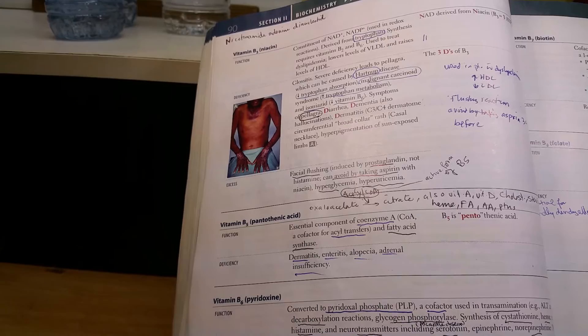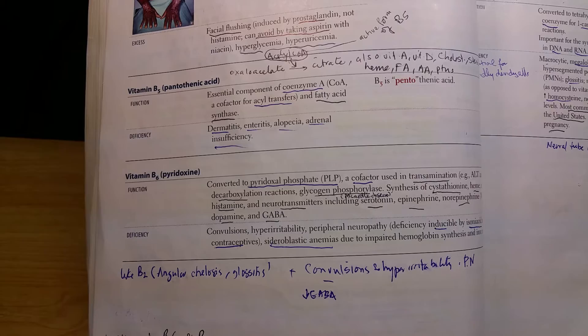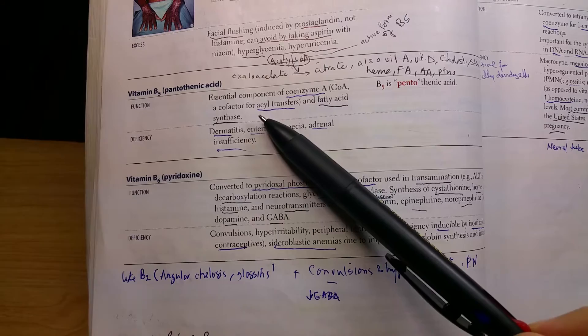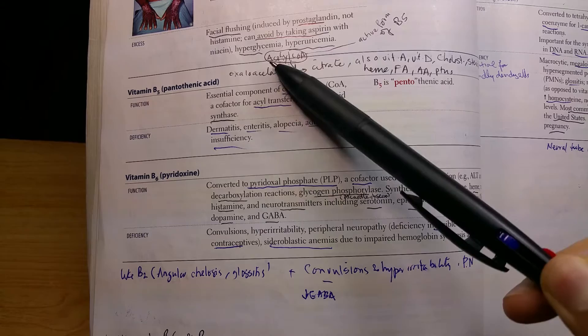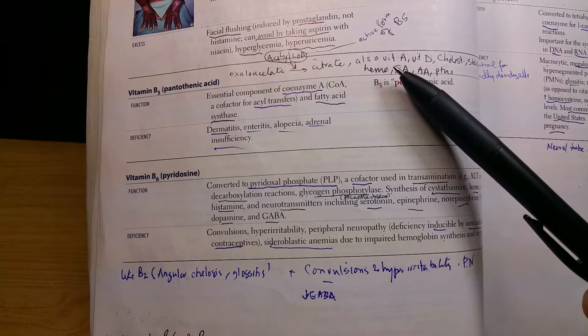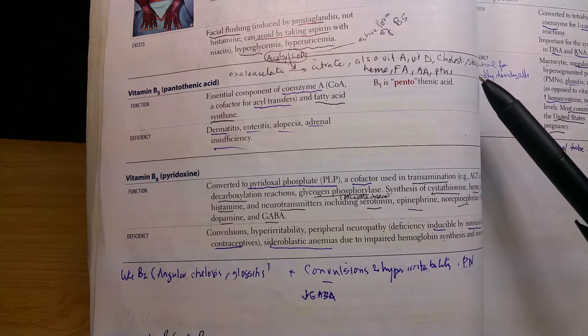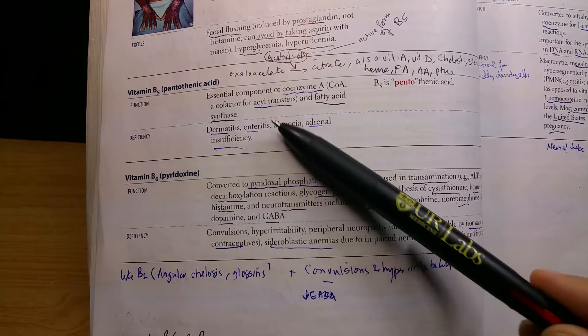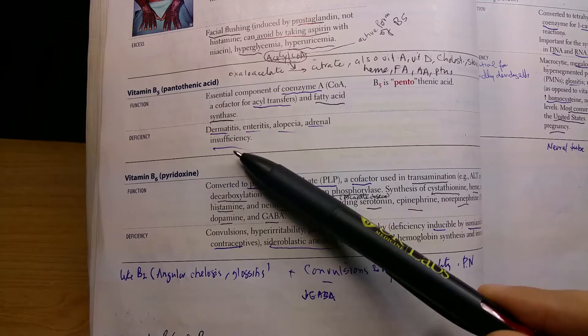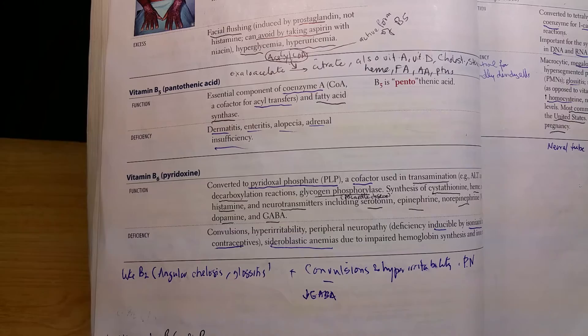We'll talk now about vitamin B5, pantothenic acid. What we have to know is that it's a coenzyme and is used as a cofactor for acyl transfer in coenzyme A. So oxaloacetate into citrate, know this reaction. But it's also used in other things. It's very important for vitamin A, vitamin D, cholesterol, steroids, fatty acids, amino acids, and proteins. The deficiency is not very important here. Adrenal insufficiency might be very specific, but it's not specific to this vitamin; it's one of the vitamin B complex deficiencies.